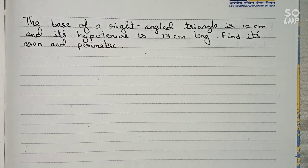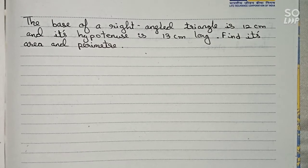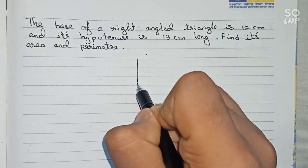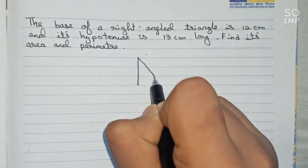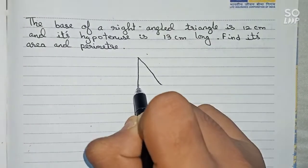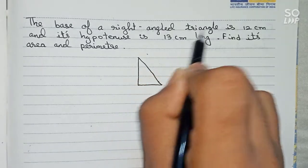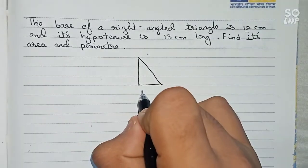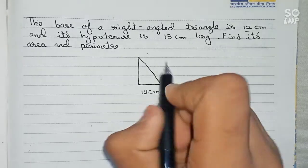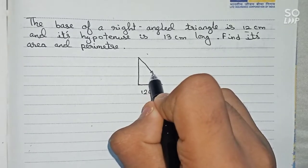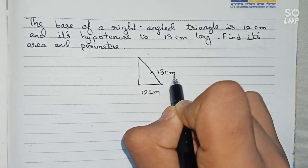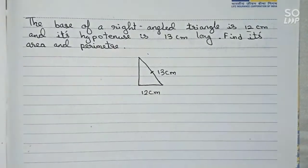To solve this, we first draw a rough diagram of the right angle triangle. Let this be our right angle triangle. It is given that the base is equal to 12 centimeters, and this is the hypotenuse, which is 13 centimeters long.